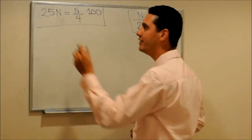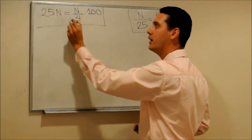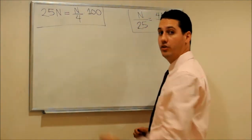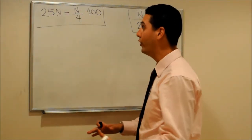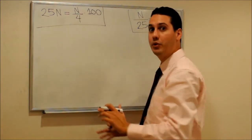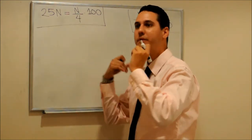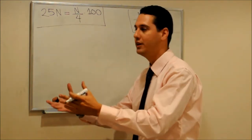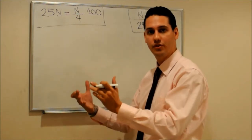Instead of using this way, we are going to use this way. Because as we mentioned before, multiplying by 100 — or multiplying by any power of 10 — is something that will come natural because of the decimal system that we use.